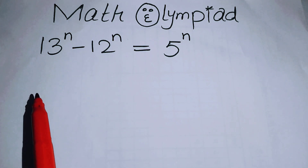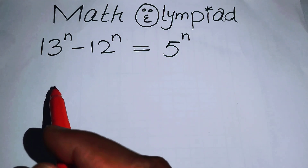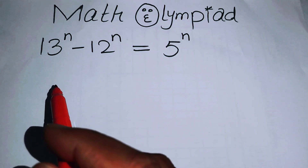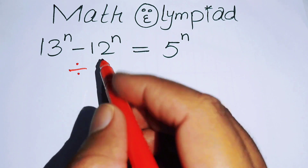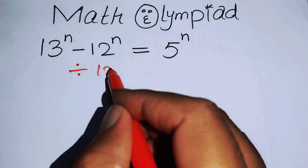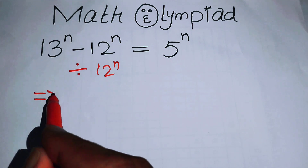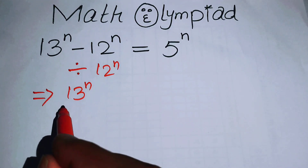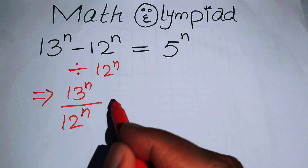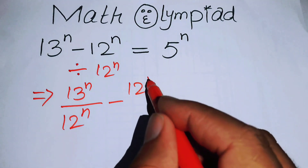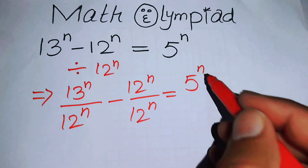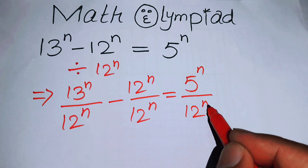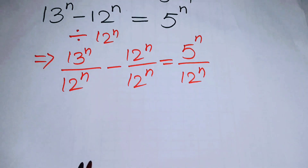I will solve this problem using a unique method. First, I will divide both sides by 12 to the power of n. When you divide both sides by 12 to the power of n, it becomes 13 to the power of n over 12 to the power of n, minus 12 to the power of n over 12 to the power of n, equals 5 to the power of n over 12 to the power of n.